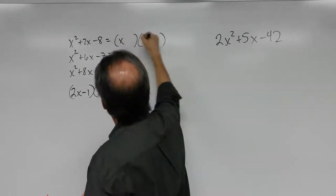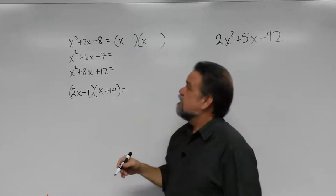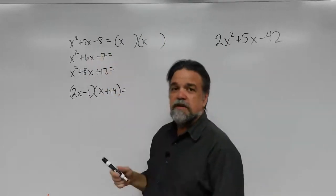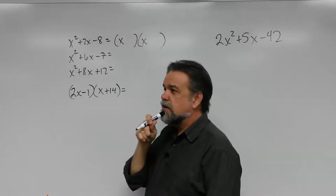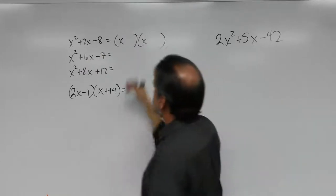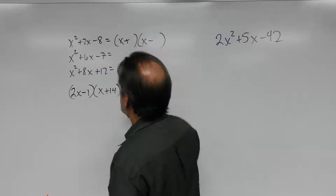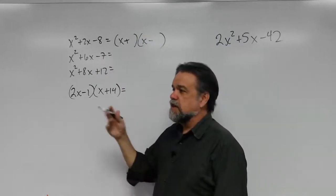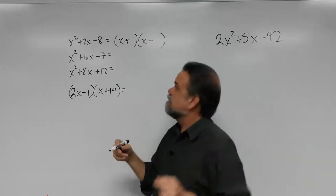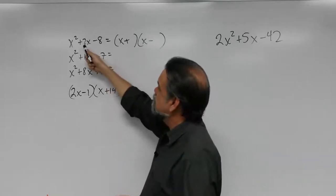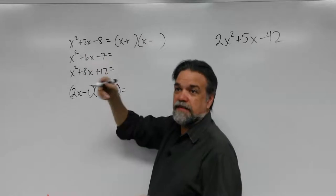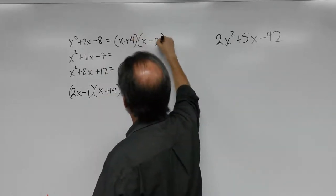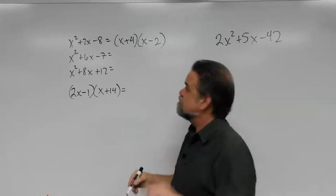I start each one with an x, and then I say: my product is going to be negative 8 and my sum is positive 2. A product of negative 8 means I have one positive and one negative. Factors of 8: there's 8 and 1, there's 4 and 2. Positive 4 and negative 2 add up to positive 2, so this factors as (x + 4)(x − 2). Let's do the next one.